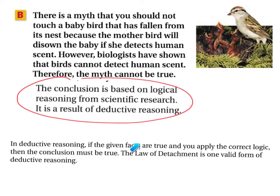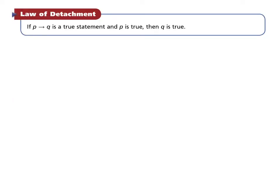In deductive reasoning, if the given facts are true and you apply the correct logic, then the conclusion must be true. The law of detachment is one valid form of deductive reasoning. The law of detachment states: if 'if P then Q' is a true statement, and P is true, then Q is true. So if you have an if-then statement that is true and P is true, then Q must also be true.